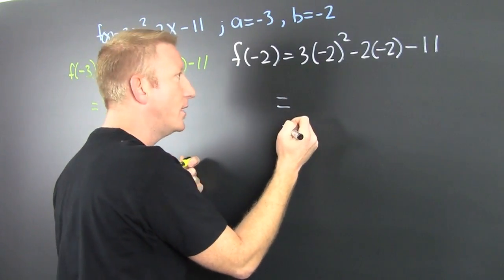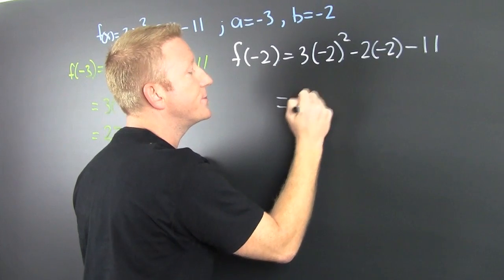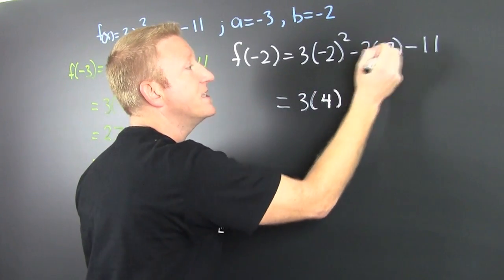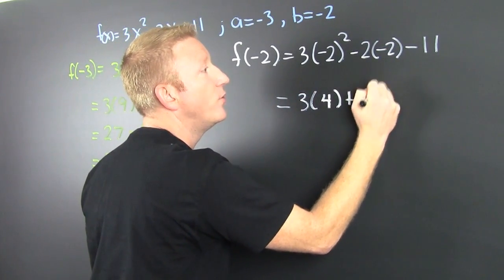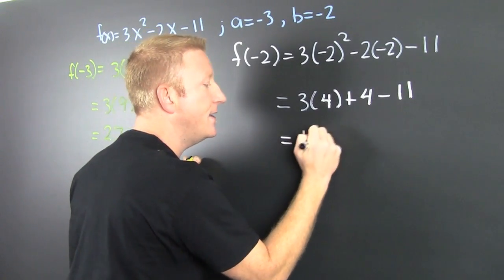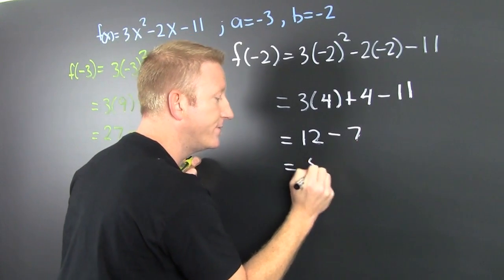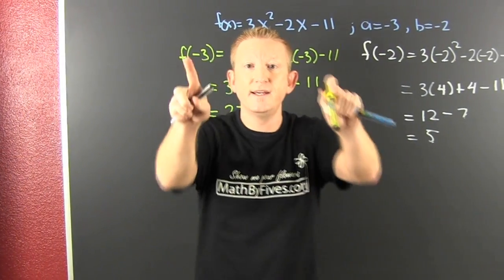Well, here we go. So this is 3(4) minus a minus plus four minus eleven. And then this is twelve minus seven, giving me five. Oh boy.